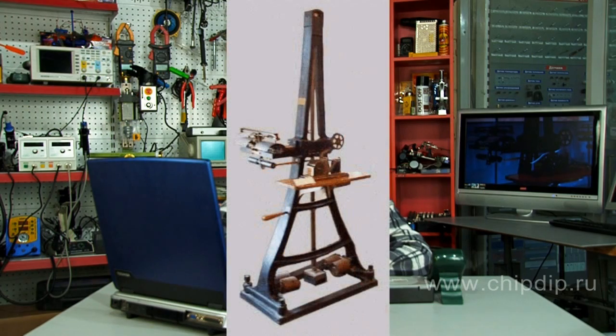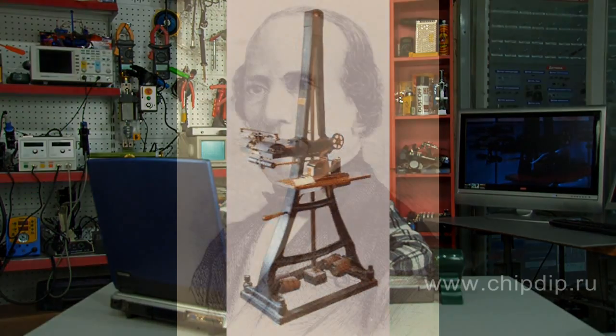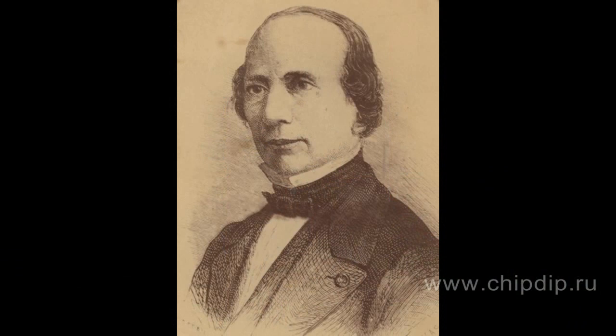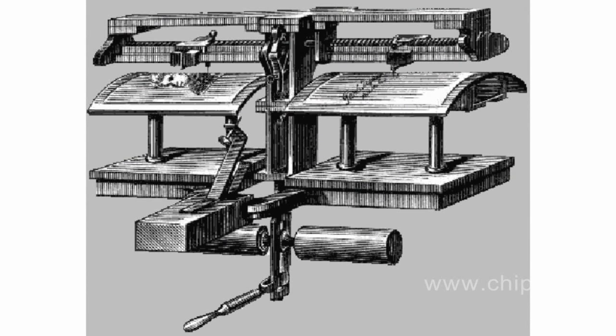Experiments in realistic transfer of images began as far back as the 19th century. One of the first such devices was Caselli's Pantelegraph, which was invented by Italian physicist Giovanni Caselli in 1856. This device was designed to transmit and receive images over distance, which naturally required conversion of images into electric signals. A metal needle played the role of the reading device.